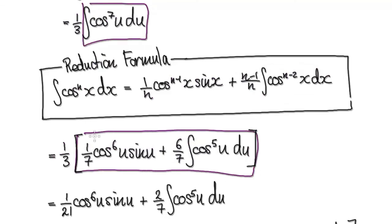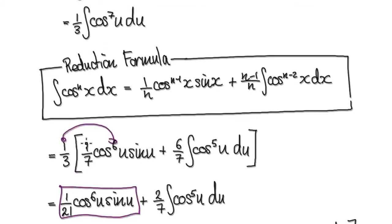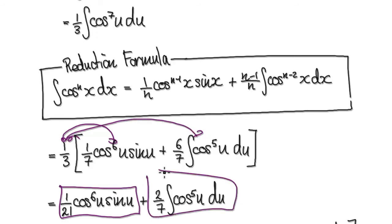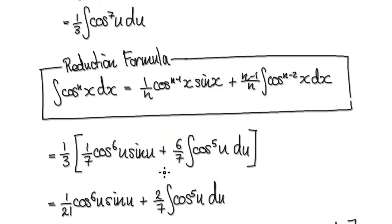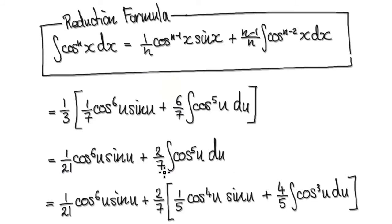And then now it's just a matter of tidying this up. This times this will then give you this. This times this will then give you this. So now we can use the reduction formula again on this.